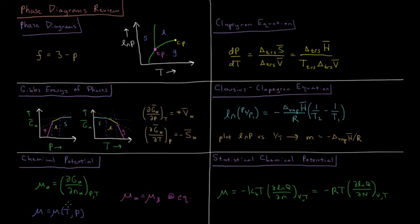We can also calculate chemical potential from statistical mechanics. It equals the negative Boltzmann constant times temperature times the partial derivative of the natural log of the partition function Q with respect to number of particles. This is also equal to minus the gas constant times temperature times the partial derivative of ln(Q) with respect to number of moles, since the gas constant is just the Boltzmann constant times Avogadro's number, and moles and particle count are related by Avogadro's number.